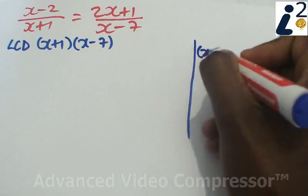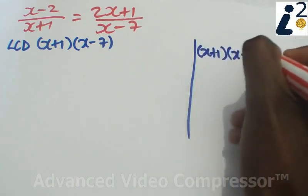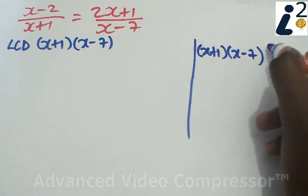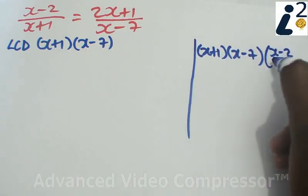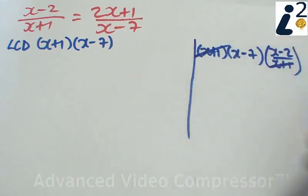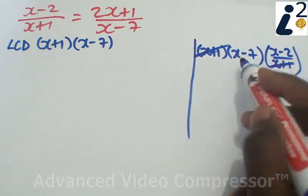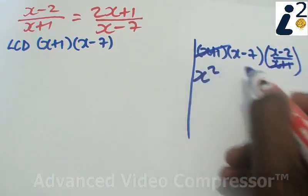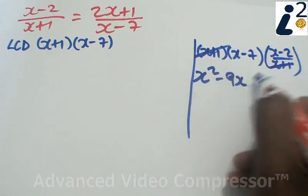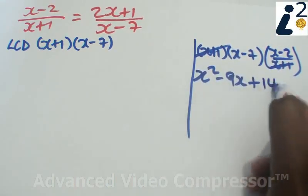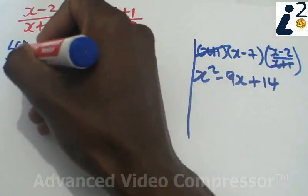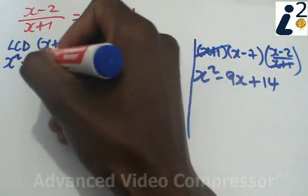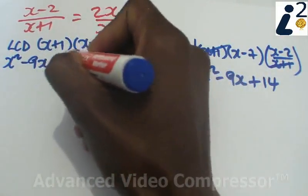So if you multiply the LCD, x plus 1, x minus 7, with the x minus 2 over x plus 1, the x plus 1 and the x plus 1 is going to cancel out and we're left with x minus 7 times x minus 2 which is x squared minus 9x plus 14. So we have the left hand side x squared minus 9x plus 14.